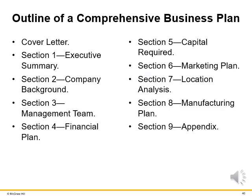A good business plan is between 25 and 50 pages long and takes about six months to write. The different sections a business plan should have include: a cover letter, executive summary, company background, management team, financial plan, the capital required to open the business, a marketing plan, location analysis, a manufacturing plan if needed, and an appendix.